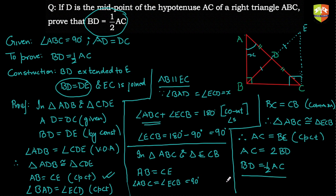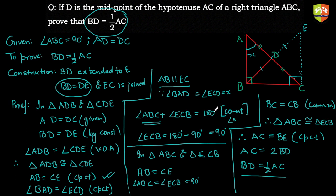The proof used two separate congruence steps to achieve the result. The key takeaway is: when nothing directly gives you the desired result, try a construction. Here, we constructed two triangles where BD was part of one and AC part of another, established congruency, and solved the problem. Construction is a very important part of geometry, and developing this skill comes with practice and observation.